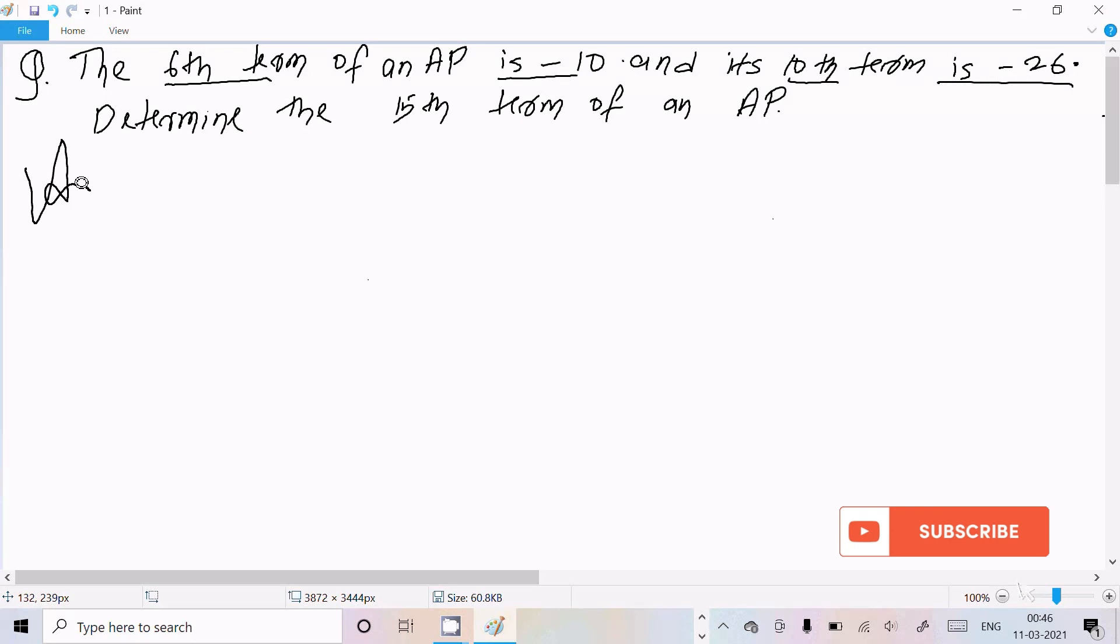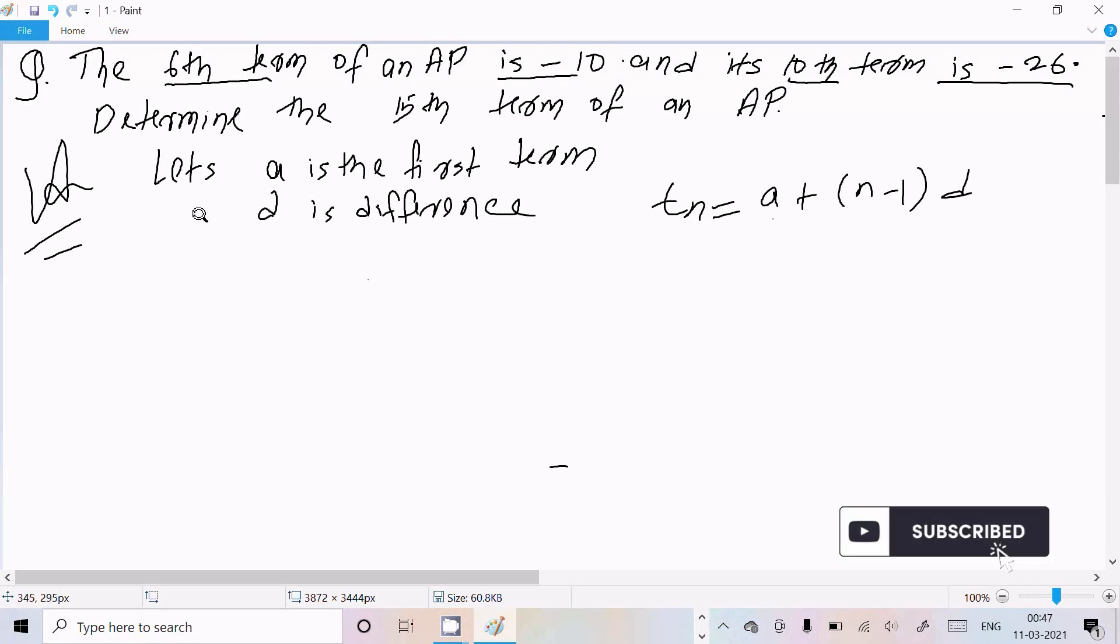So let's see the answer. Here, let A be the first term and D be the difference. We know here that the nth term Tₙ = A + (n-1) × D.